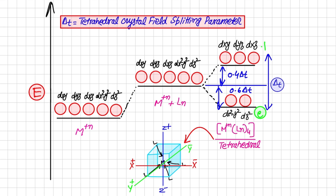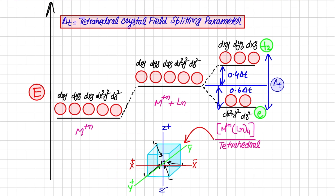In tetrahedral geometry, g is not written — so the labels are e and t2 instead of eg and t2g. The reason is that when you invert a tetrahedral complex, there is no center of inversion, so g is absent. This was the basic comparison between octahedral and tetrahedral crystal field splitting. If you have any questions, please leave them in the comments. Thank you.